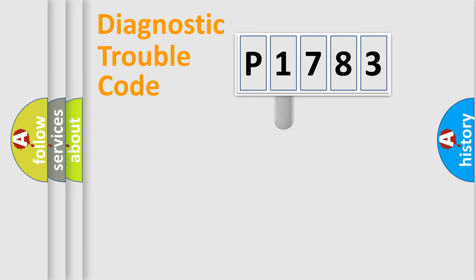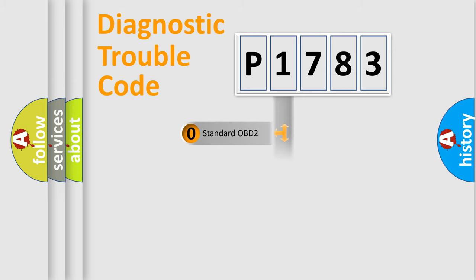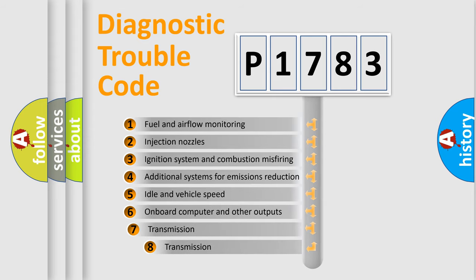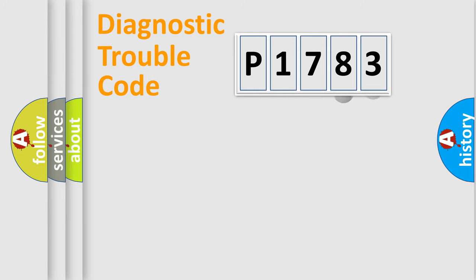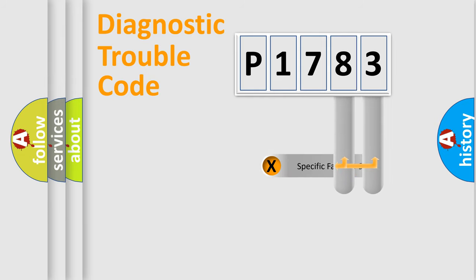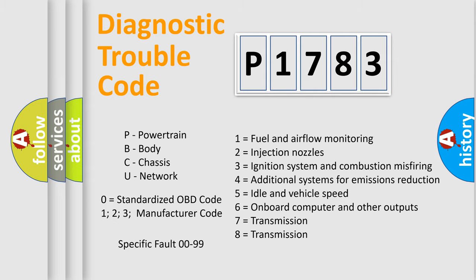This distribution is defined in the first character of the code. If the second character is expressed as zero, it is a standardized error. In the case of numbers 1, 2, or 3, it is a manufacturer-specific error. The third character specifies a subset of errors. The division shown is valid only for the standardized DTC code, and only the last two characters define the specific fault of the group.